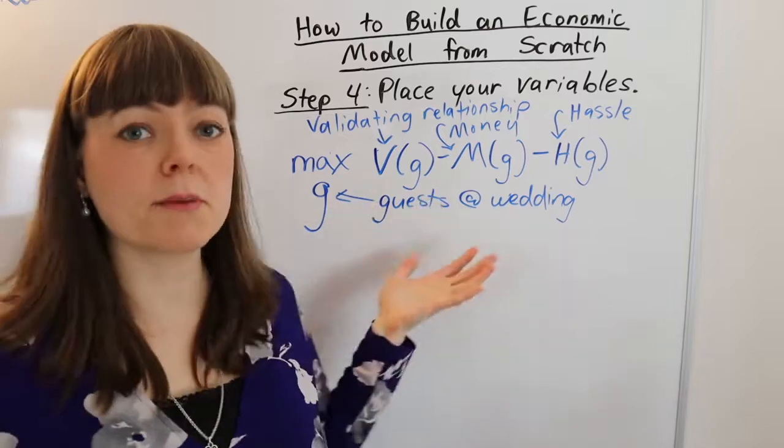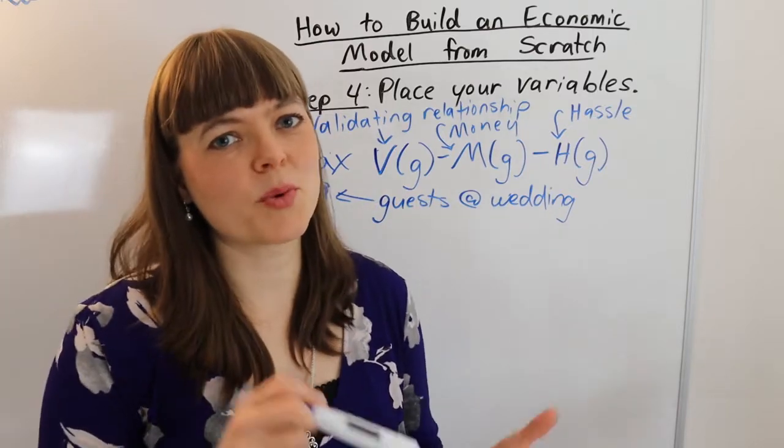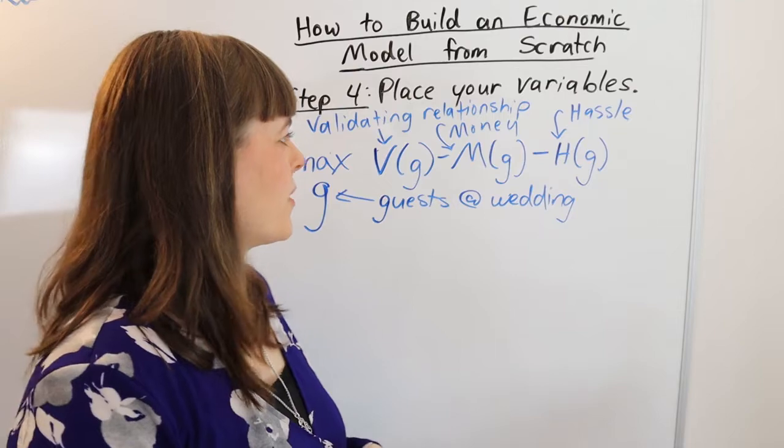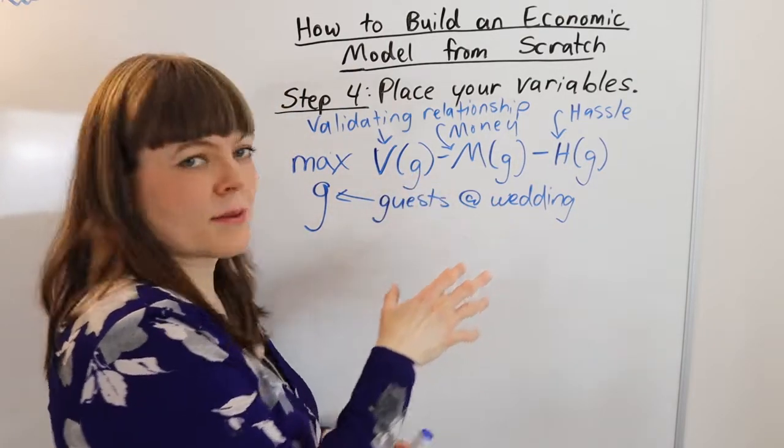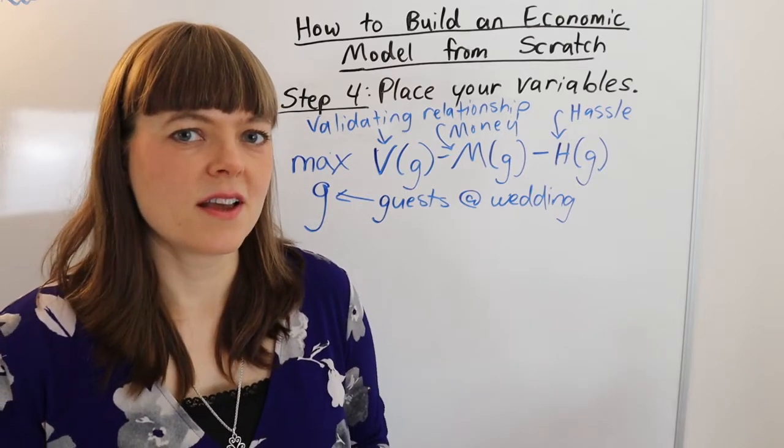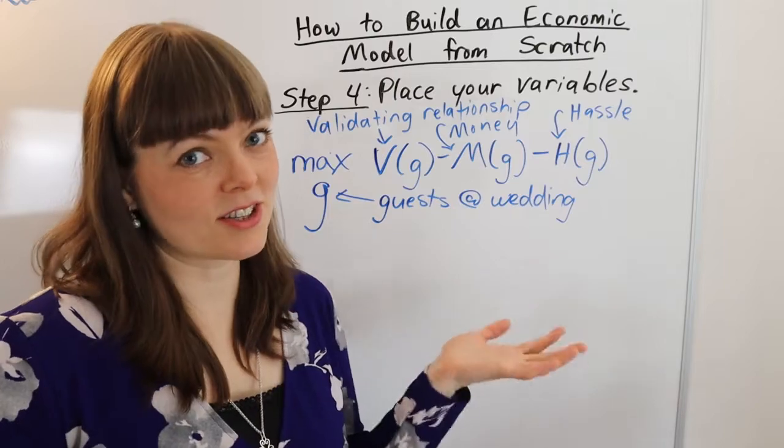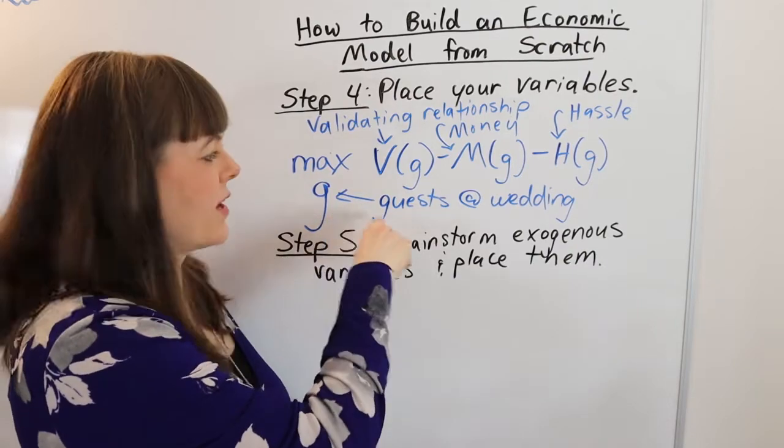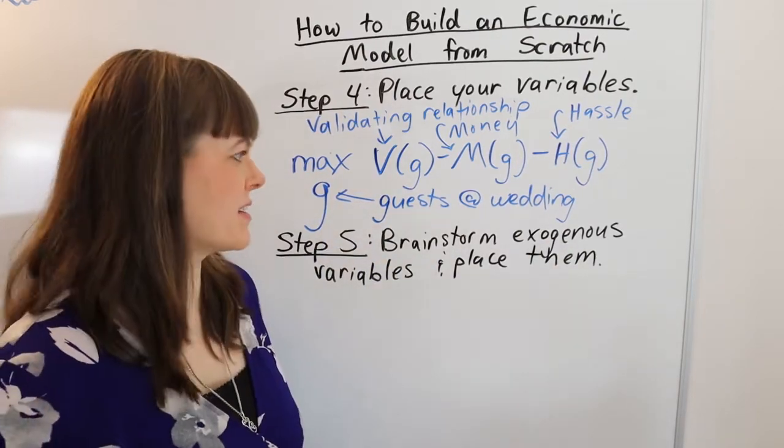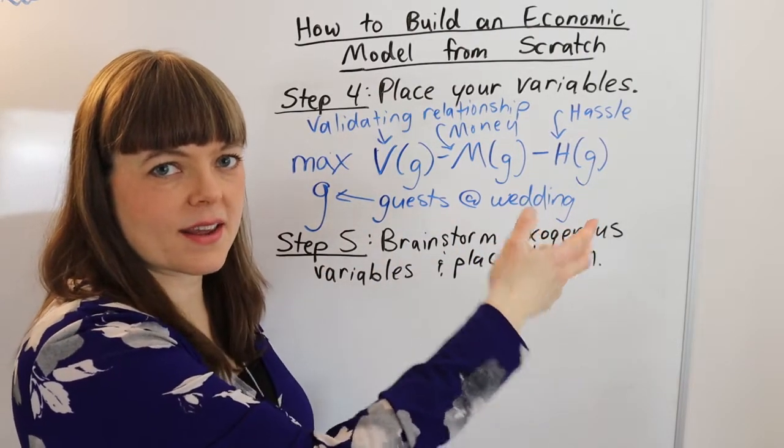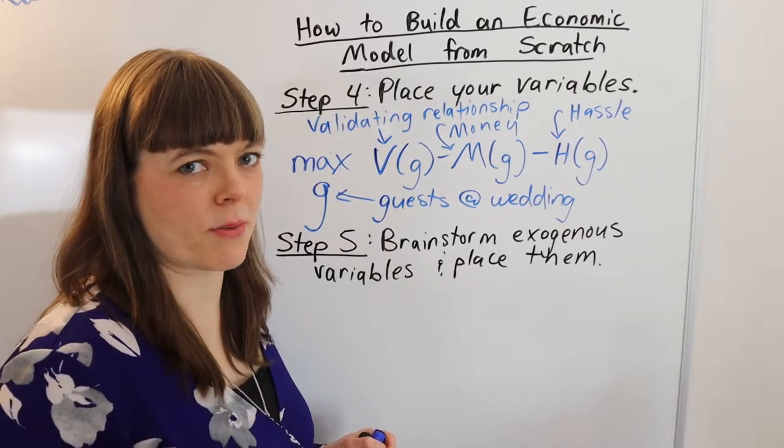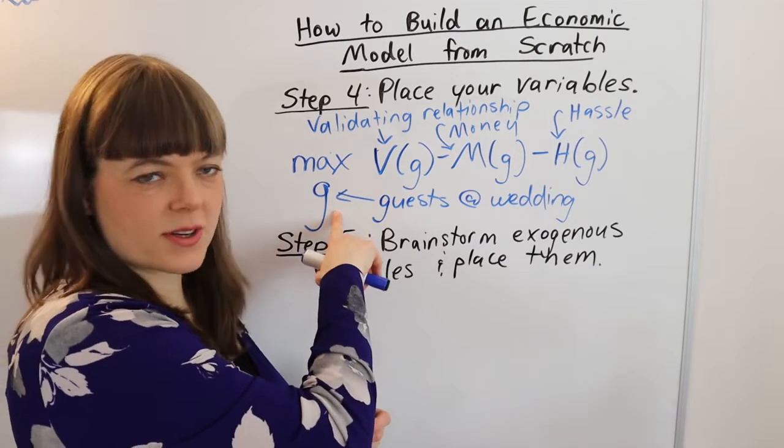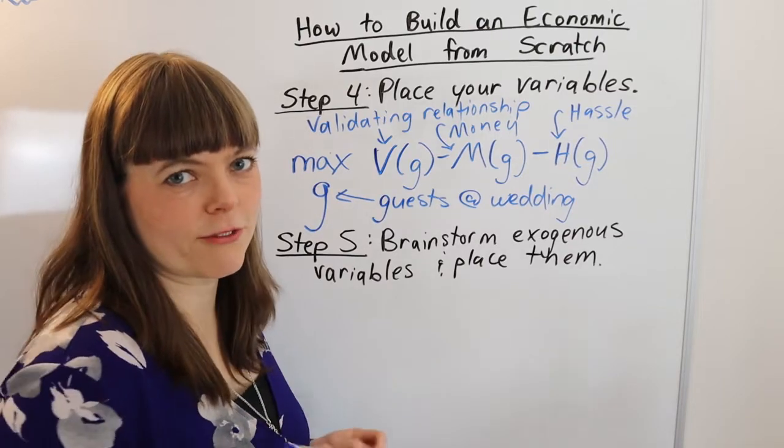Now, this is a model. So you have fully built a model at this point. But a lot of times we want to build these models for the purpose of doing little thought experiments. And to do those thought experiments, you oftentimes want to insert some interesting exogenous variables. So the next step really is to brainstorm exogenous variables. So exogenous variables are going to influence the optimal choice of number of guests that you would want to invite. But if you change the number of guests that you have at the wedding, the exogenous variables should not respond to that. Now that's just the definition of an exogenous variable. So you're just thinking about what factors are going to influence optimal choice. And let me just brainstorm with you right here.